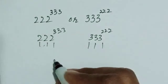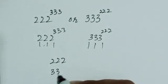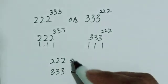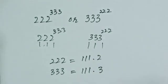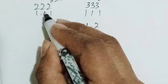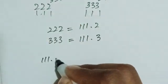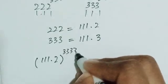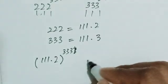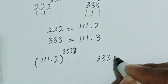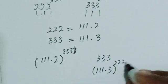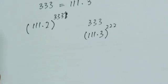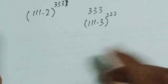Looking at 222 and 333, I have to find what is common between these two numbers. The common term is 111. So I can write 222 as 111 times 2, and 333 as 111 times 3. This is the approach I'm going to use to compare these two numbers.